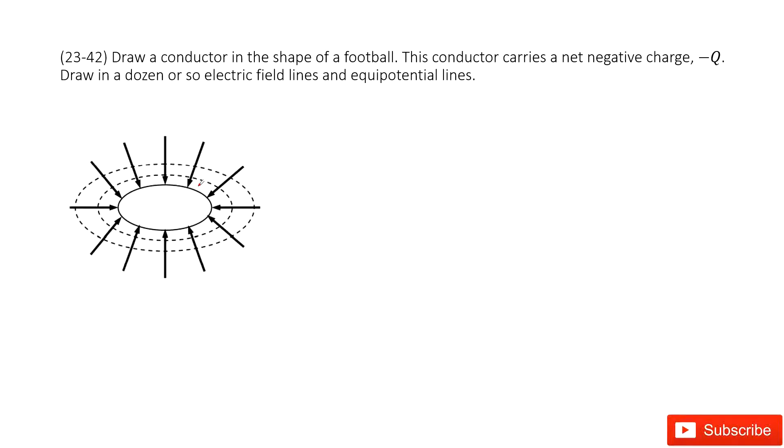Now we need to draw the electric fields and equipotential lines. So first we draw the electric fields. We know this is a conductor, so the charge only distributes on the surface of this football. The electric fields will be perpendicular to this small surface, to this football.